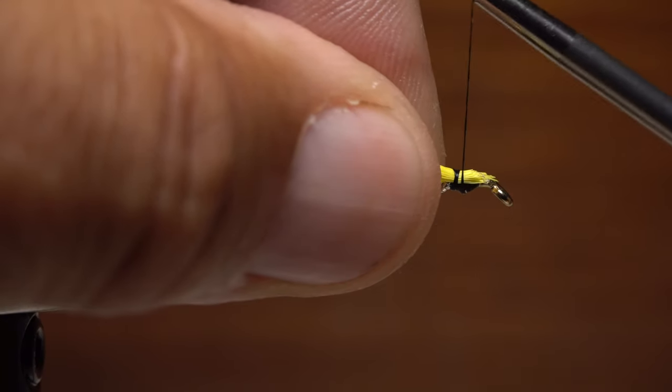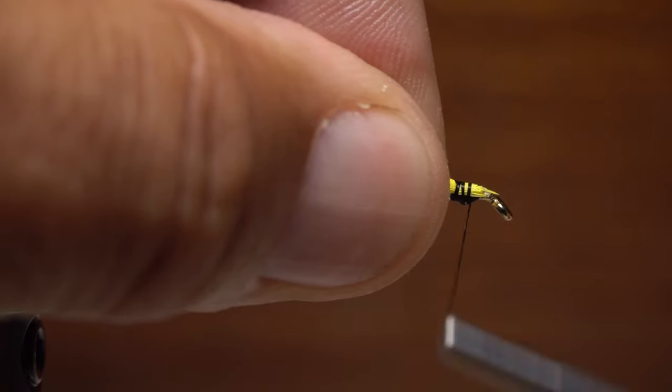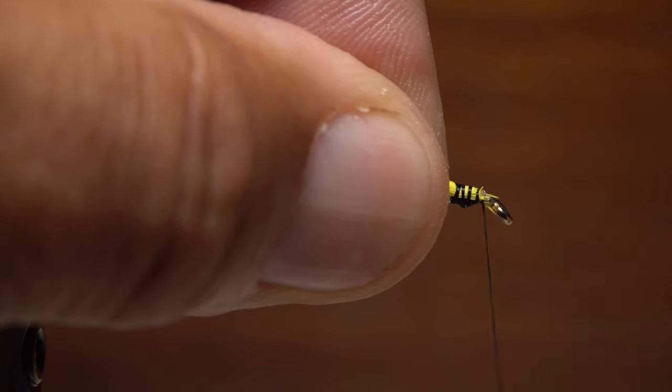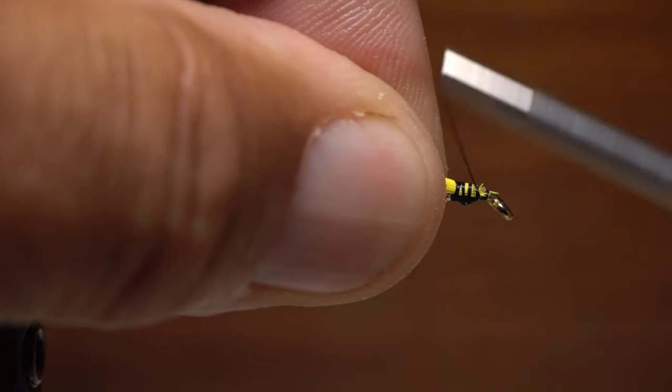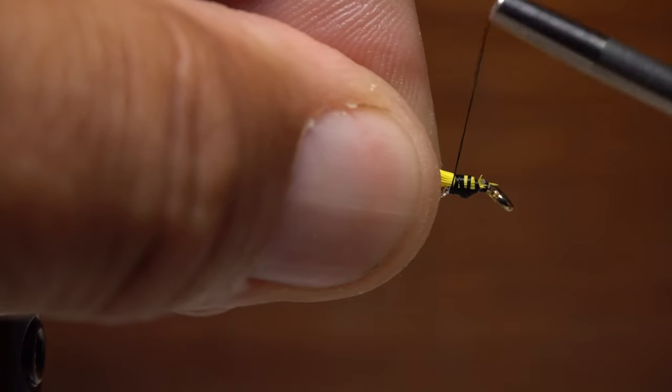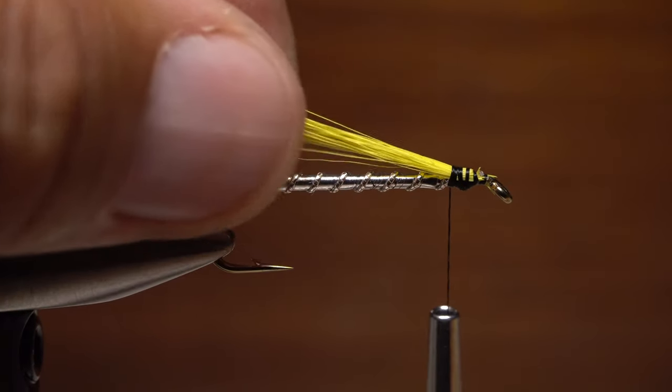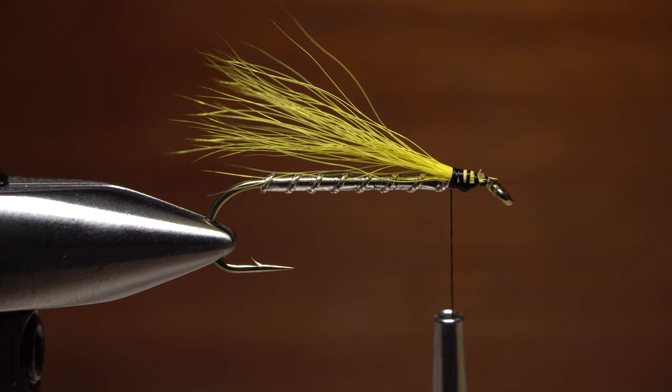Take thread wraps forward over the snipped off ends, down to the hook shank to the back edge of the hook eye. Take thread wraps rearward to where you took that first wrap around the bucktail. This will be the back edge of the head of the fly.